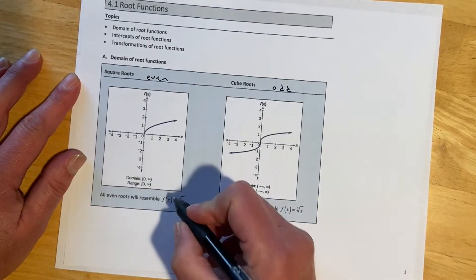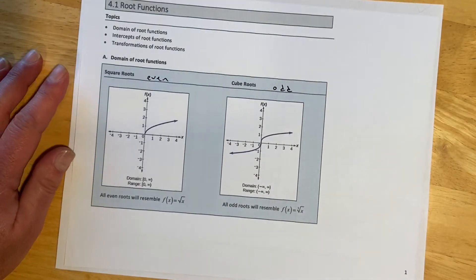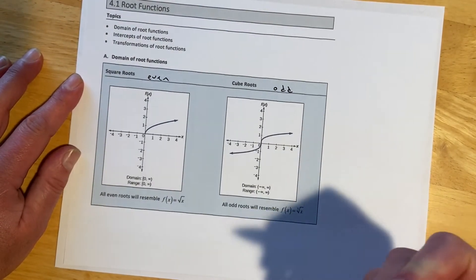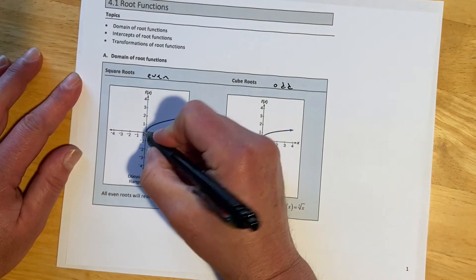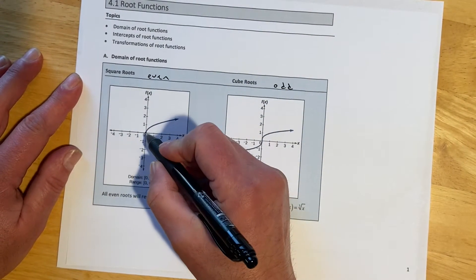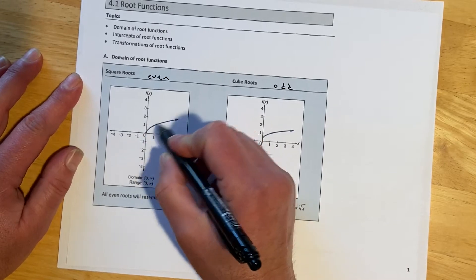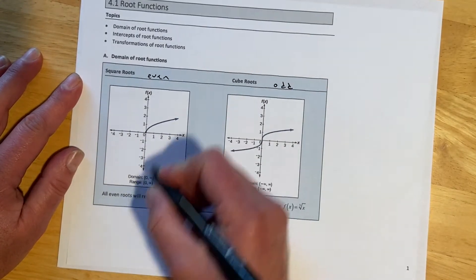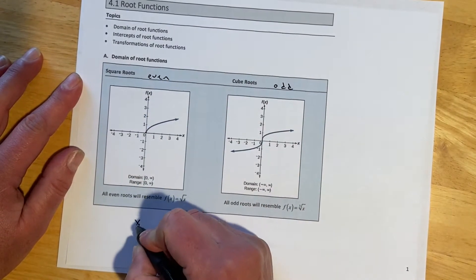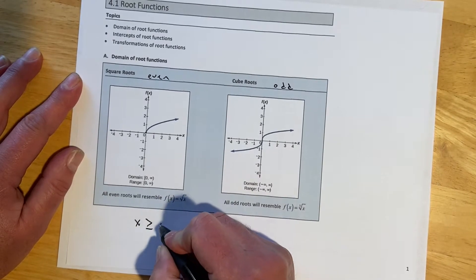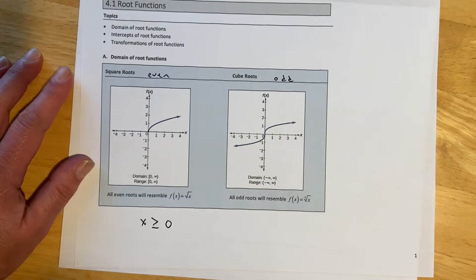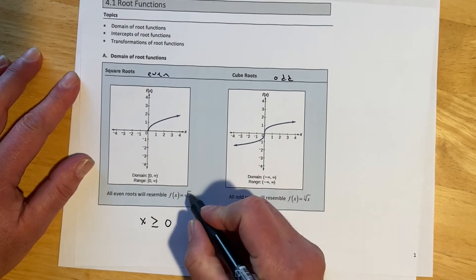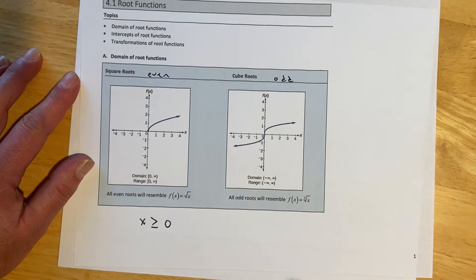For an even root, we have the issue that we can't take the square root of a negative because it gives us an imaginary number, so they're going to have domain restrictions. In general, when looking at the domain of an even root, x has to be greater than or equal to zero. Whatever is under the radical has to stay greater than or equal to zero because we can't get that negative number.